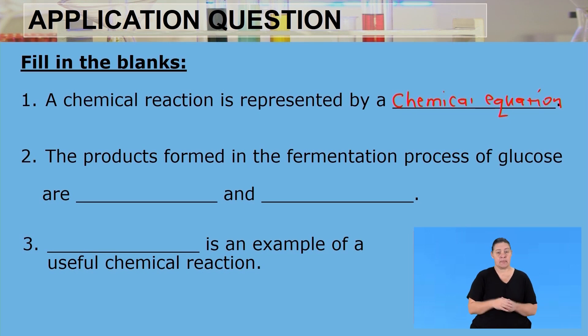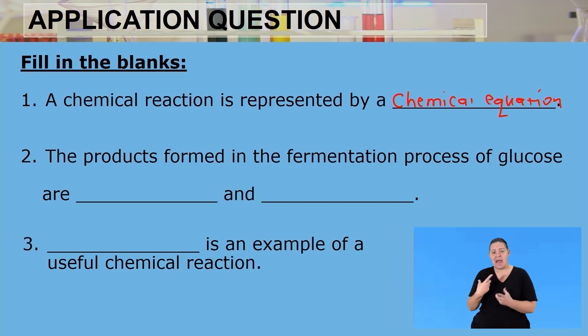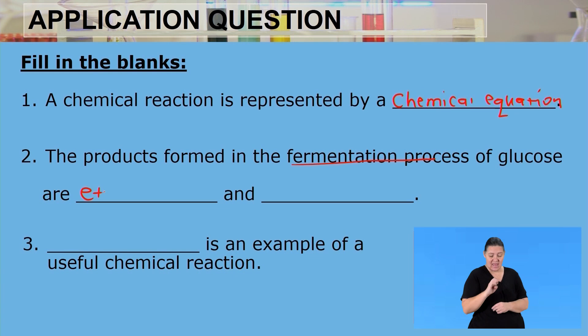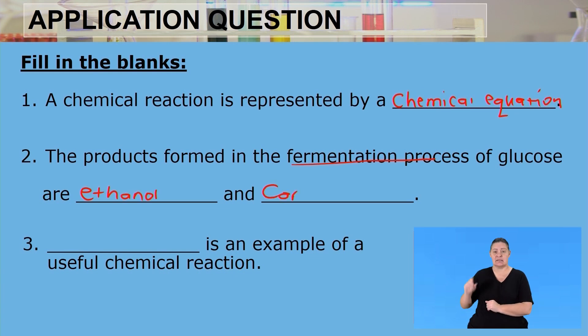Question two: the products formed in the fermentation process of glucose are ethanol and carbon dioxide. Remember, ethanol is the alcohol produced during fermentation.